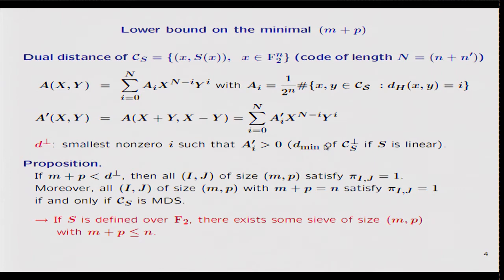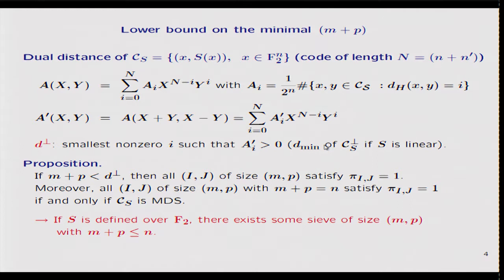Moreover, we can prove that there always exists some sieve which involves only n bits, where n is the size of the S-function, except if the code is an MDS code. In particular, because MDS codes are always only defined on large alphabets, if S is defined only on F_2, then there always exists some sieve which involves n bits only.